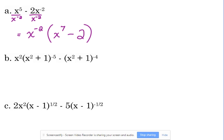So there's that idea. Okay, well, what if we make it a binomial? Something like B here. So x squared times x squared plus 1 to the negative 5th, minus x squared plus 1 to the negative 4th.